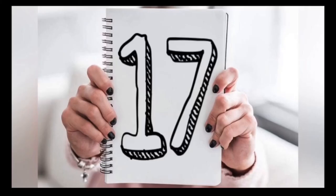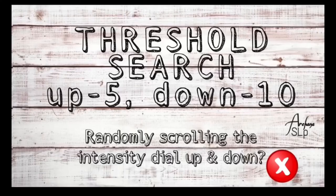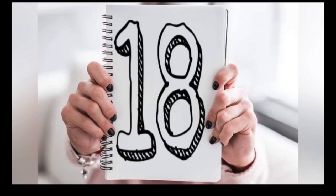Tip number 17: threshold search. The appropriate procedure is to lower the level of the tone by 10 dB after every 'yes' response and raise the level of the tone by 5 dB after every 'no' response.